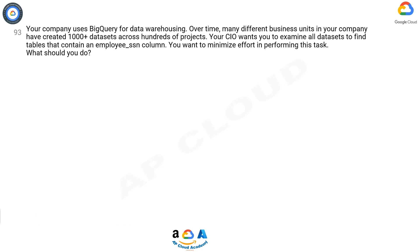Your company uses BigQuery for data warehousing. Over time, many different business units in your company have created 1,000 plus datasets across hundreds of projects. Your CIO wants you to examine all datasets to find tables that contain an employee_ssn column. You want to minimize effort in performing this task. What should you do?